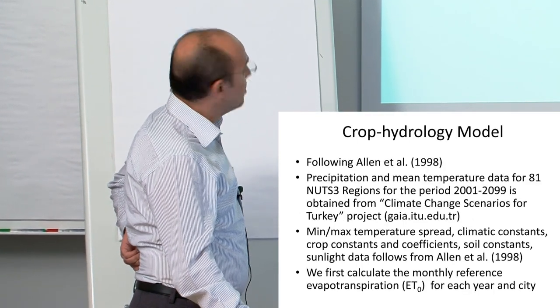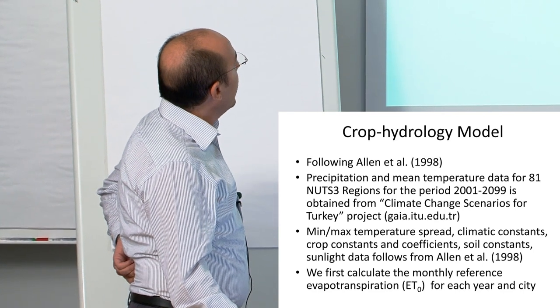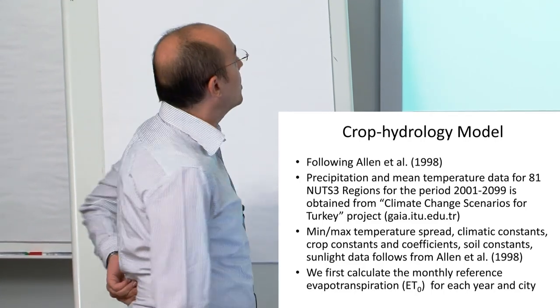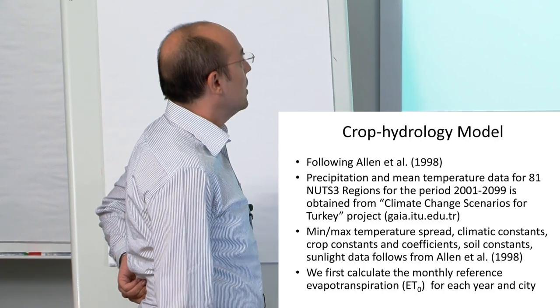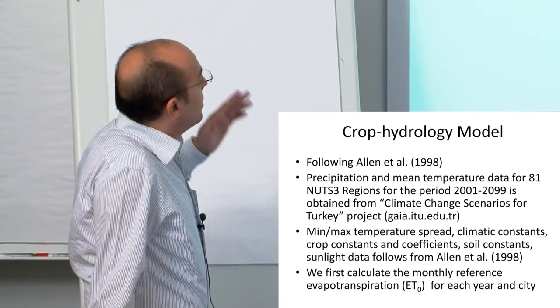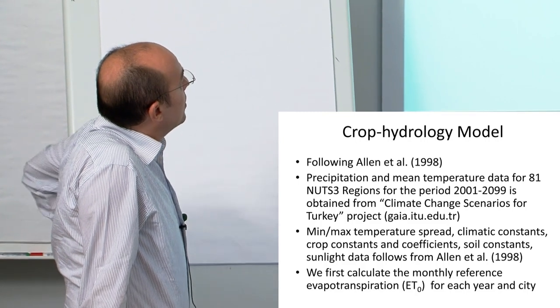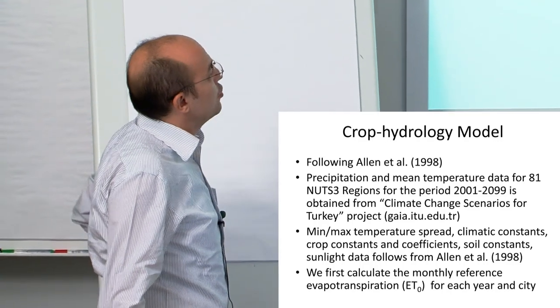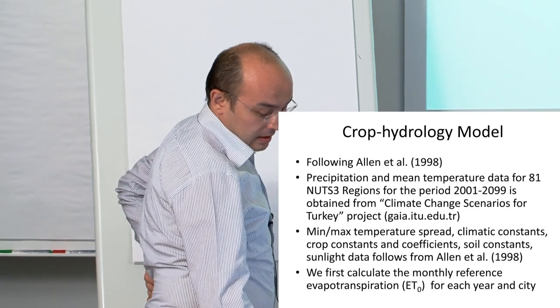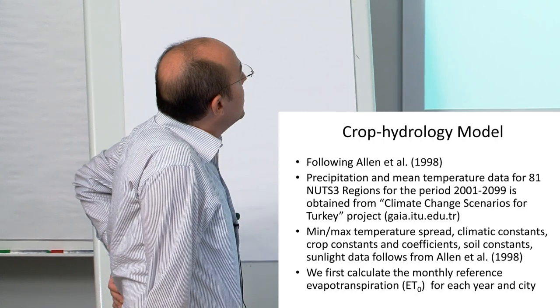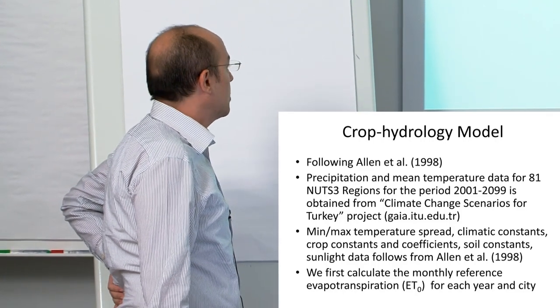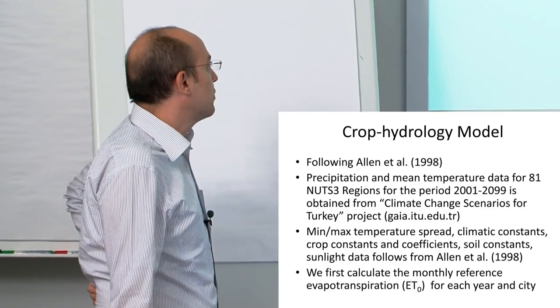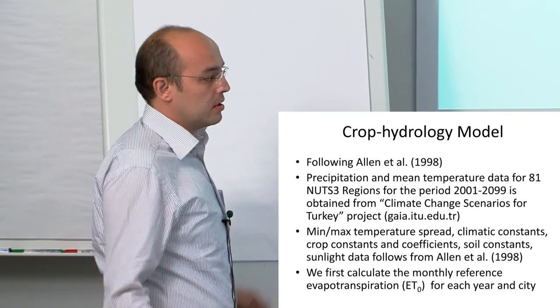In the crop hydrology model, we follow Allen et al. and use precipitation and mean temperature data for 81 provinces. It's a simple model that works for 81 regions for 100 years. Results are obtained from climate change scenarios for Turkey project. We get minimum, maximum temperature, wind speed, climatic constants, crop constants, and coefficient soil constants. Most data needs follow from the FAO's CropWat database.